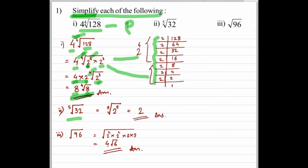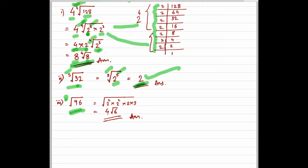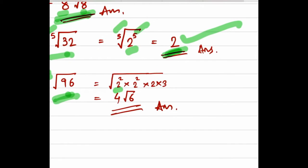Next: 5th root of 32 → prime factors of 32 give 2⁵. Power and order both 5, so 2 comes outside and nothing remains inside (value 1). Answer: 2. Next: root 96 → order is 2, find prime factors. Group pairs of 2: two sets of 2² and remaining 2 × 3. So 2² × 2² = 4 outside, leaving 2 × 3 = 6 inside. Answer: 4 root 6. These are simple questions — understand them well and you'll handle bigger problems too.